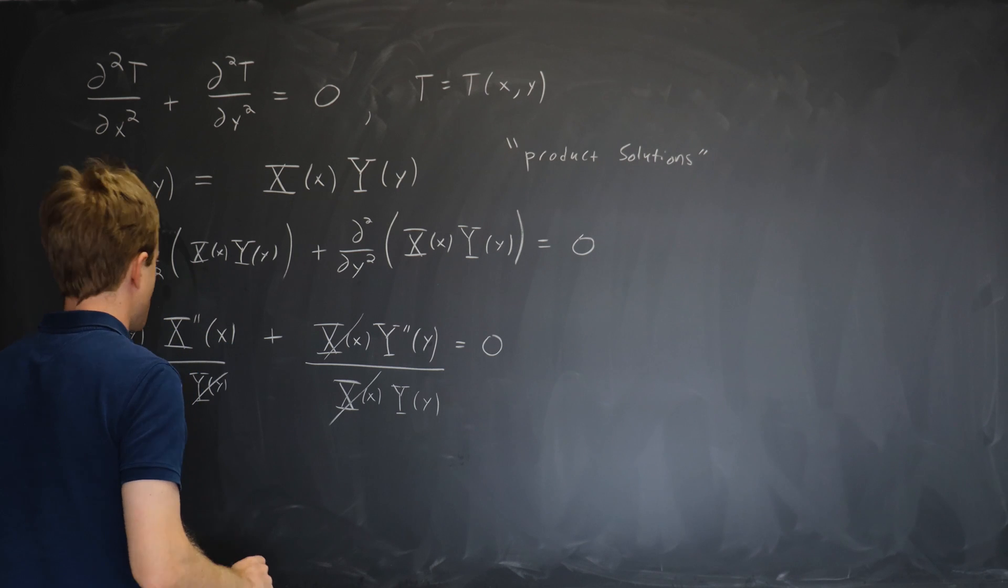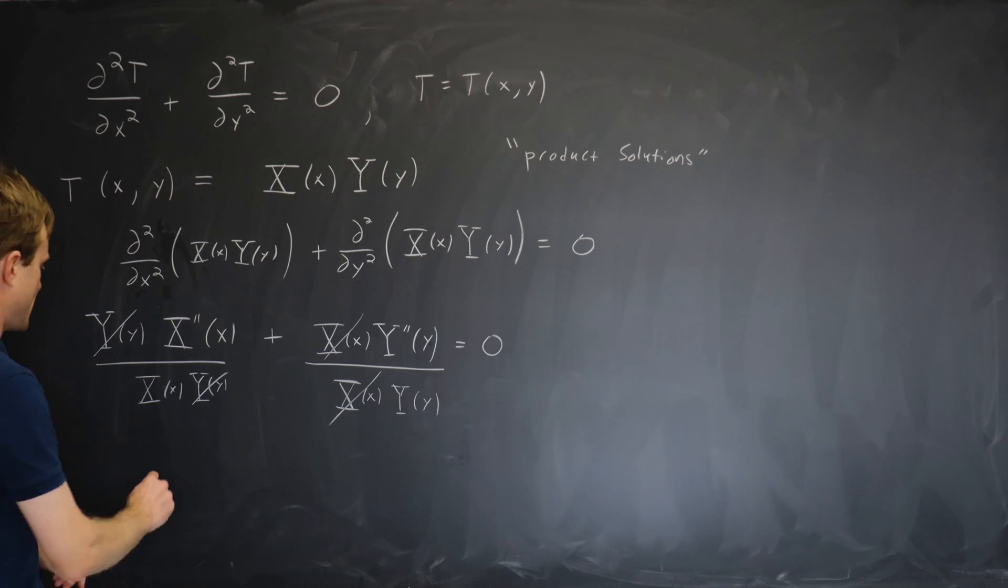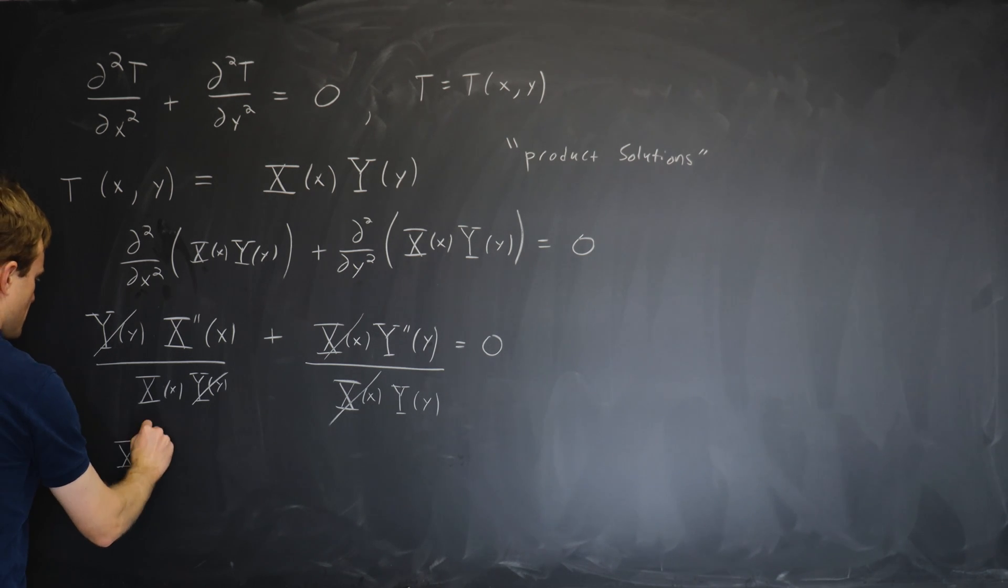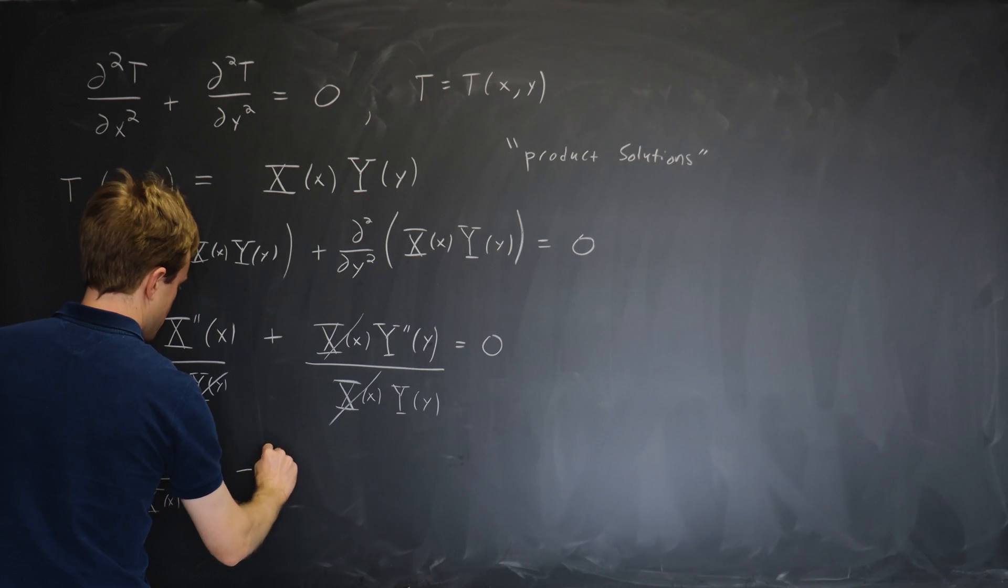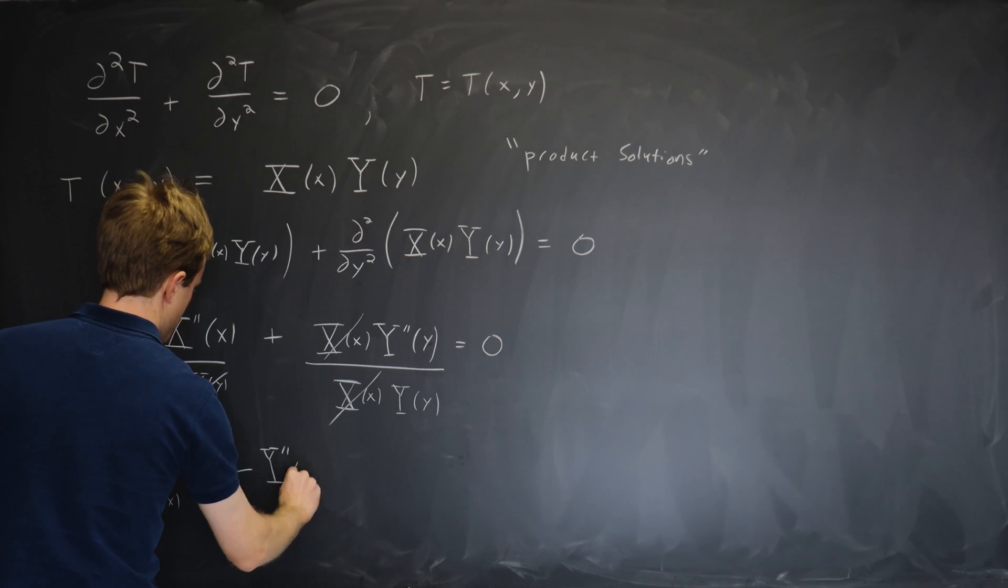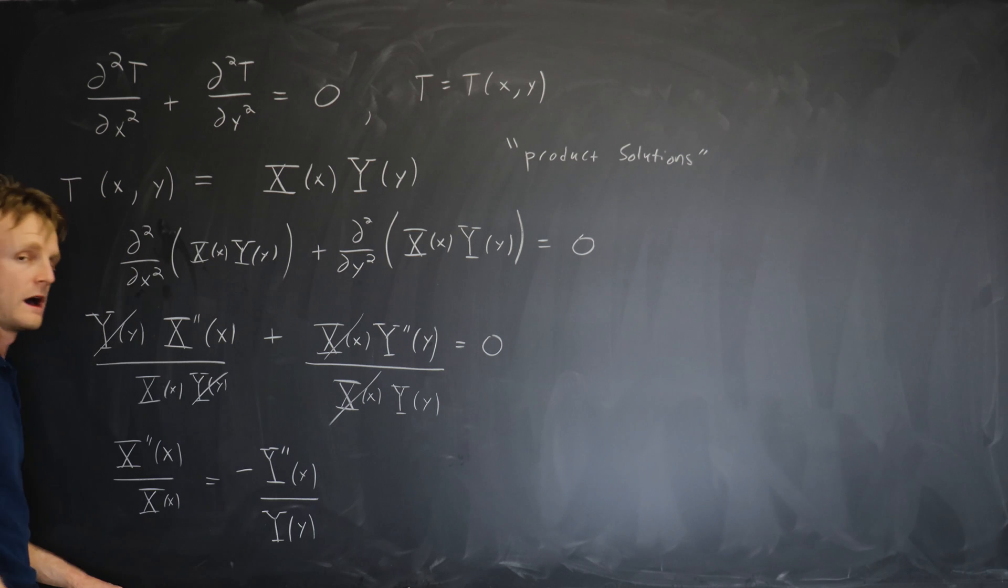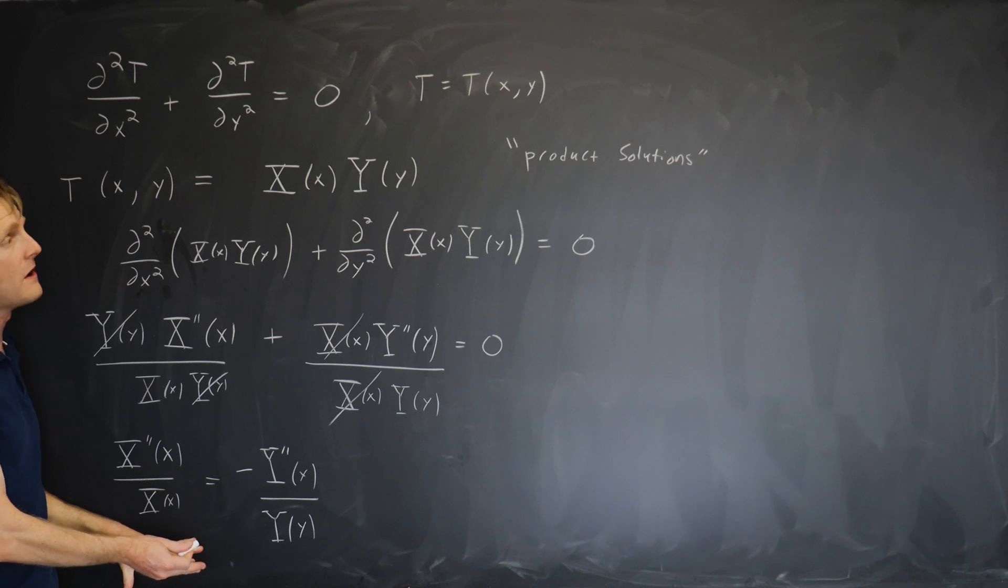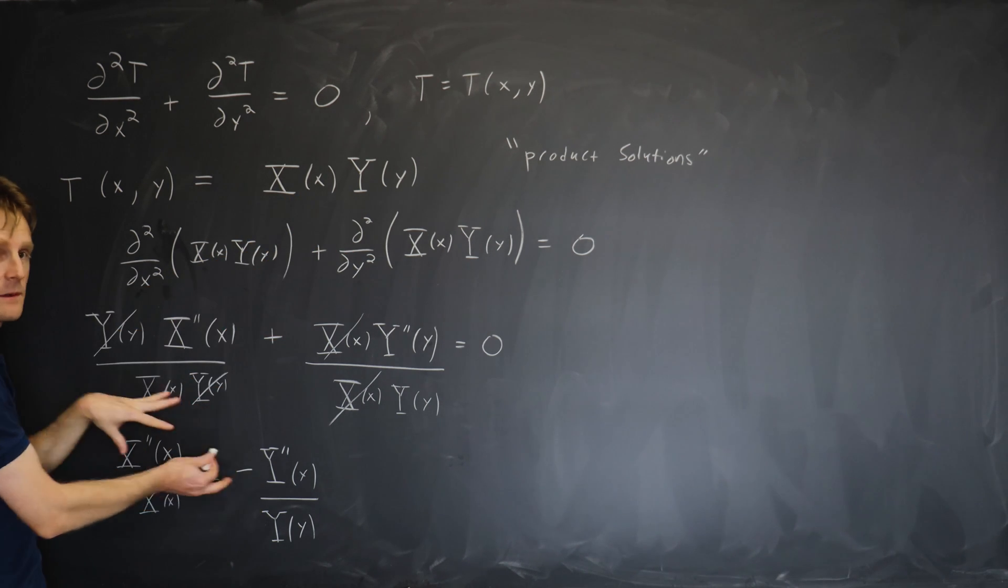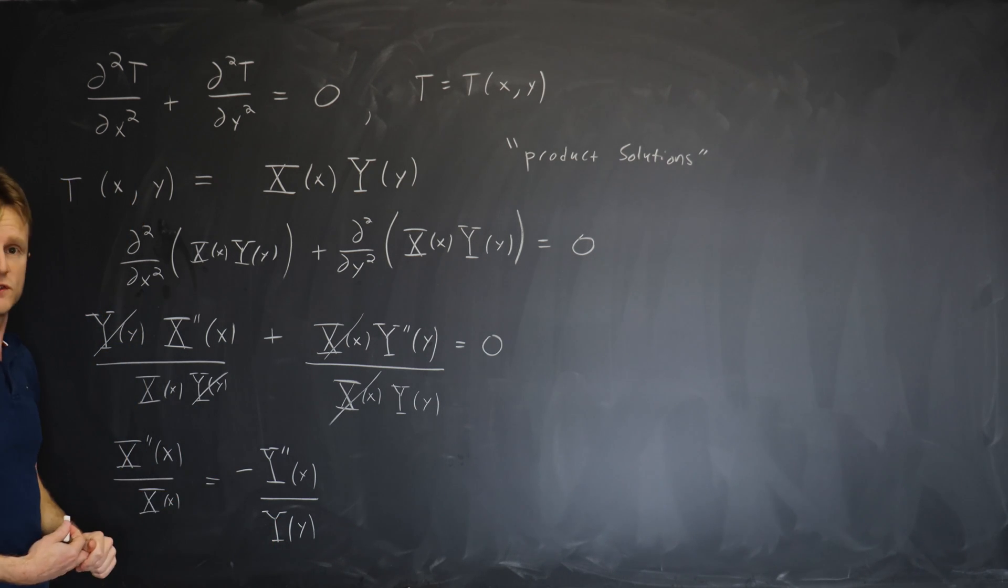So if we keep going we can write this as the following equation: x double prime of little x over capital X of x is equal to minus y double prime of y over capital Y of y. So now we've succeeded. If your equation that you started with can be put in this form, where the two members of the product solution appear on separate sides of the equation, you say the equation is separable and the method is working. So Laplace's equation is separable.